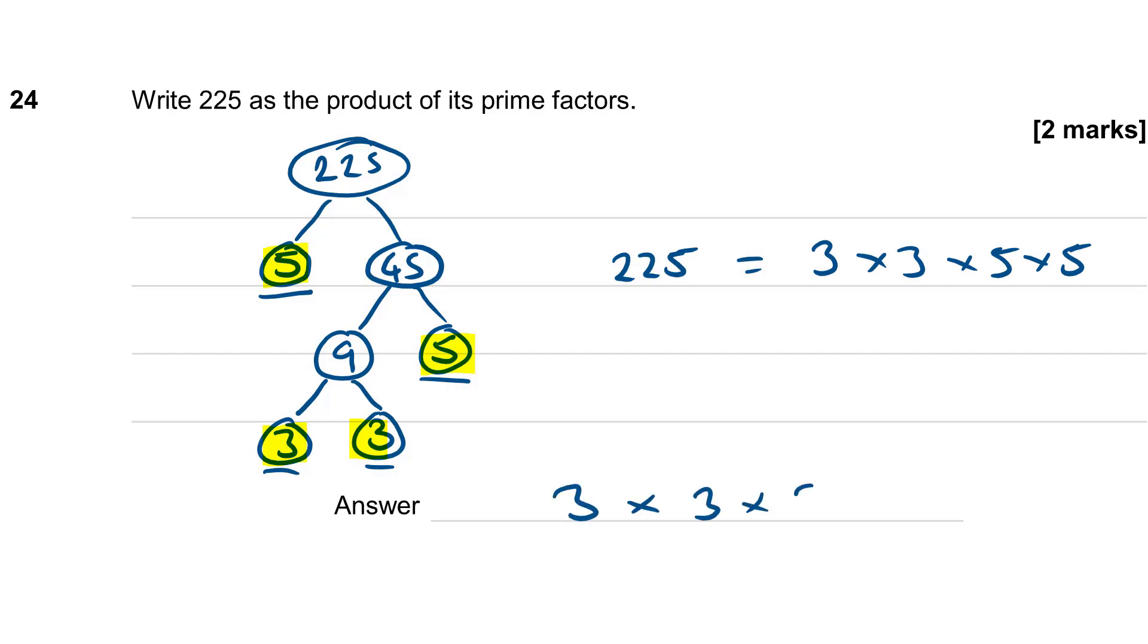Sometimes these questions ask for an index form, in which case you could just rewrite it as 3 squared times 5 squared, but actually it doesn't specify it here, so either answer is acceptable.